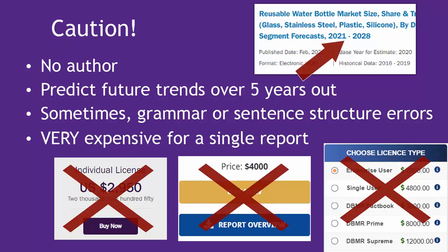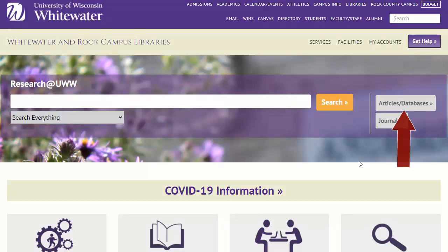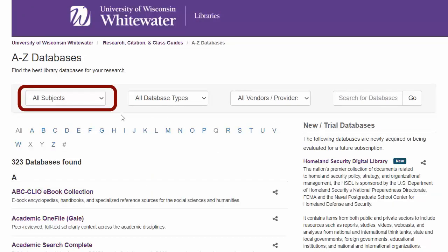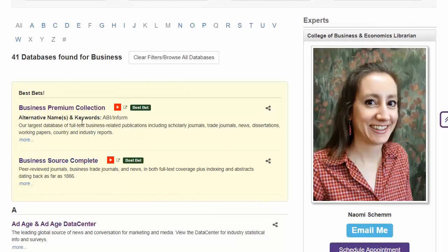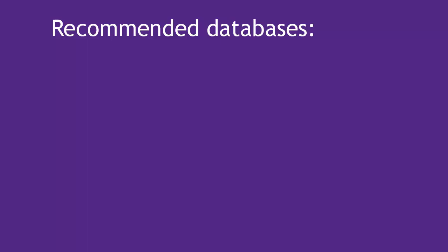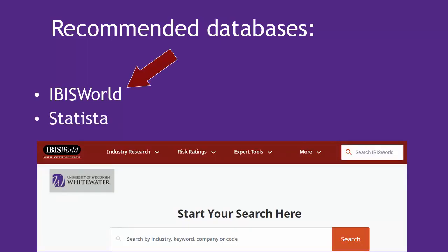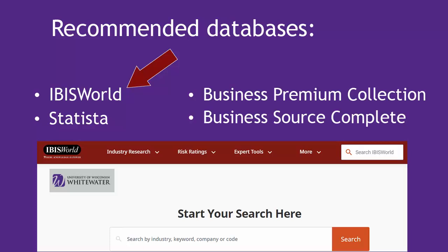Instead of spending time there, I recommend you go to our library's subscription databases for resources that we've already purchased and quality verified for you. Get to these via the library's home page, the Articles Databases button, then select Business from the Subject drop-down menu, and go to the database name you want. For demand information, I recommend these databases: first, IBISWorld; then Statista; and finally Business Premium Collection and Business Source Complete.